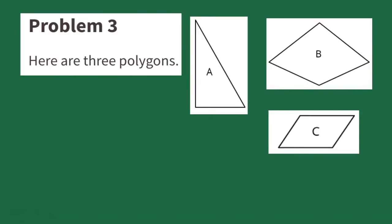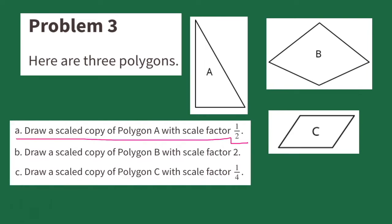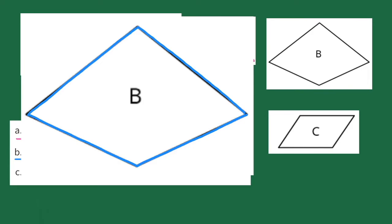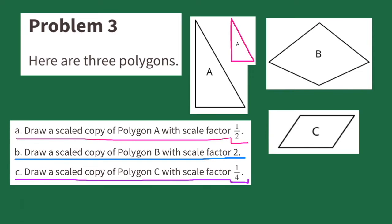Number 3. Here are three polygons. Part A: Draw a scaled copy of Polygon A with a scale factor of one-half. Our copy needs to have half the height and half the width. Part B: Draw a scaled copy of Polygon B with a scale factor of 2. Our copy has to have double the height and double the width. Part C: Draw a scaled copy of Polygon C with a scale factor of one-fourth. The copy's height and width need to be one-fourth of the original.